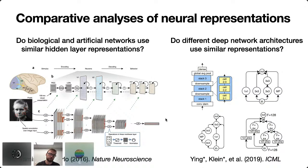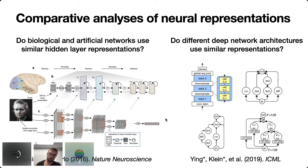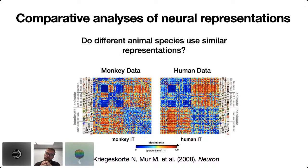In deep learning and machine learning, the appetite is growing to consider similar questions. Researchers are interested in training neural networks that produce multi-purpose representations usable for many downstream tasks, and they're becoming interested in understanding how changing the objective function, network architecture, or training procedure impacts hidden layer representations and their transferability. Within neuroscience there's also a lot of interest in comparing neural activation patterns between different biological systems — both across individual animals of the same species and across different species.